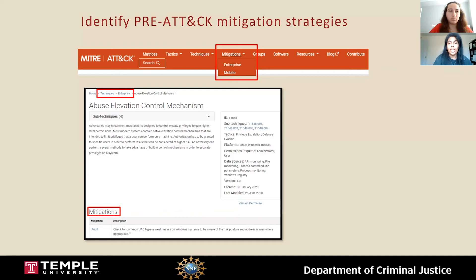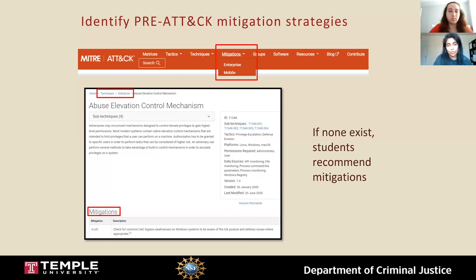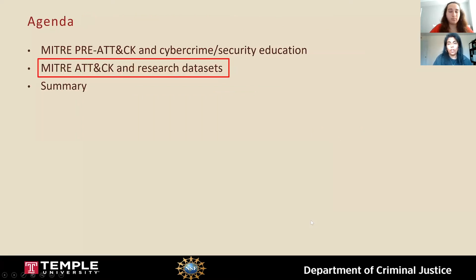We are trying to get our students to think about what something similar would look like for PRE-ATT&CK for social engineering — what would be those mitigation strategies? And if none exists, students are then encouraged to recommend mitigations. These might take the form of, for instance, policy or training and awareness, moving beyond that technical domain. So the overall objective here is that students learn about threat intelligence, about mapping, about identifying patterns and trends, and also about mitigation. These are our efforts in the education space.